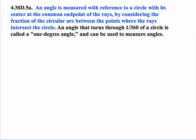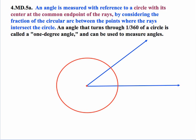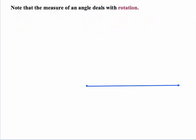So let's look at a visual representation to get a handle on what this says. So when we are measuring an angle it's going to be with regard to a circle with its center at the common endpoint of the rays. So in other words the center of the circle and the vertex of the angle are one and the same point. Now the angle is measured by considering the fraction of the circular arc between the points where the rays intersect the circle. So the rotation is this here, this arc.